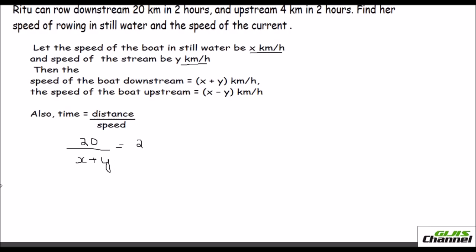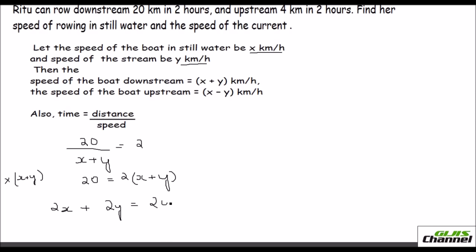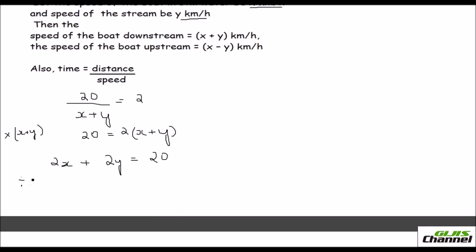Multiplying throughout by x plus y to get rid of the denominator, we get 20 equals 2 times (x plus y), which gives 2x plus 2y equals 20. Dividing throughout by 2, since 2 is the common factor, we get the first equation: x plus y equals 10.